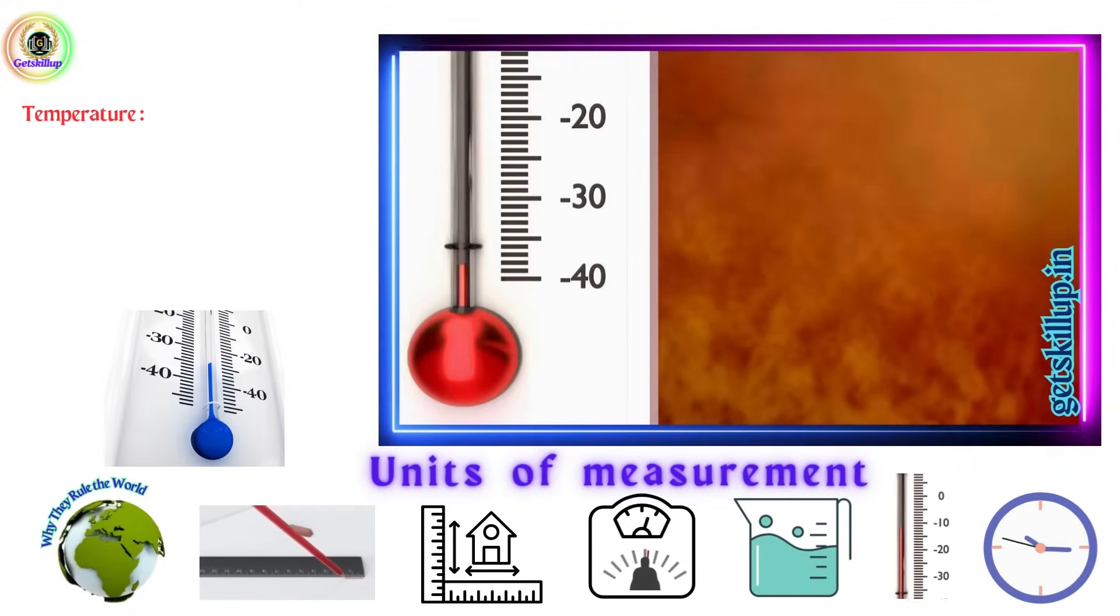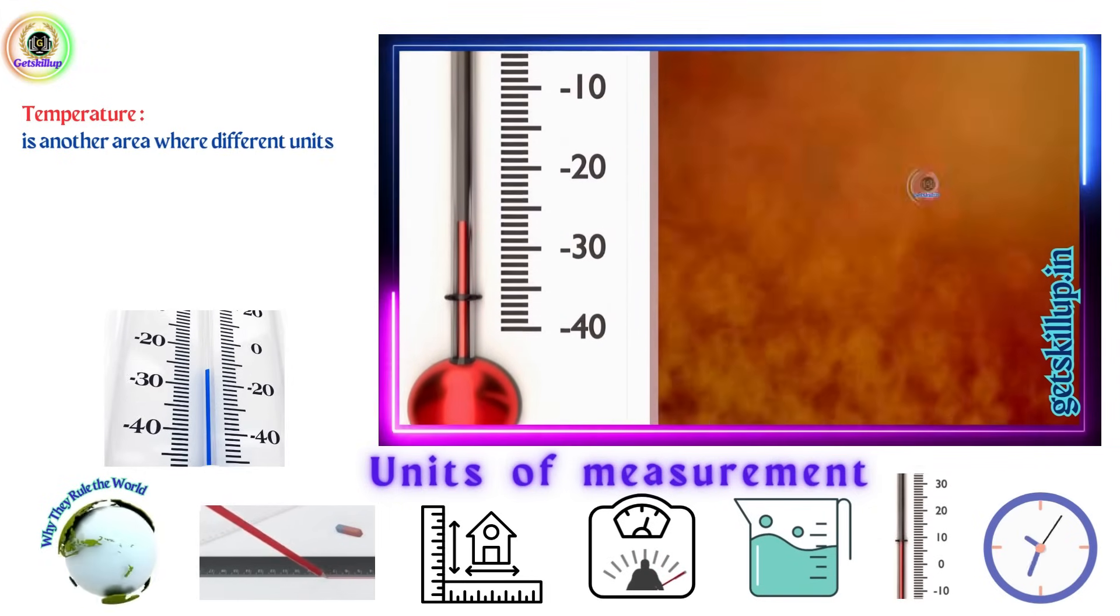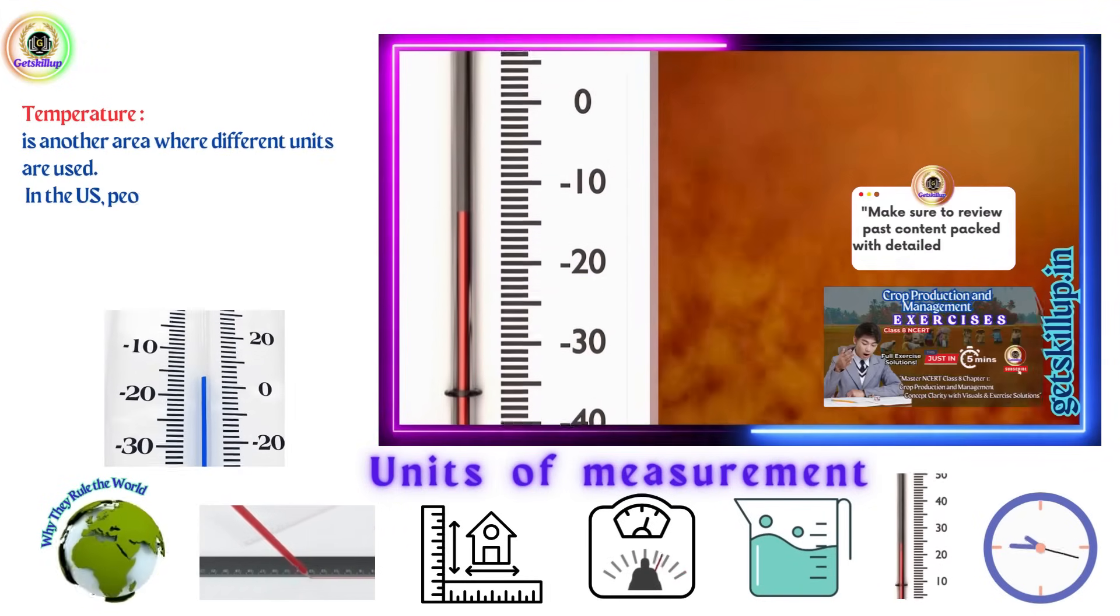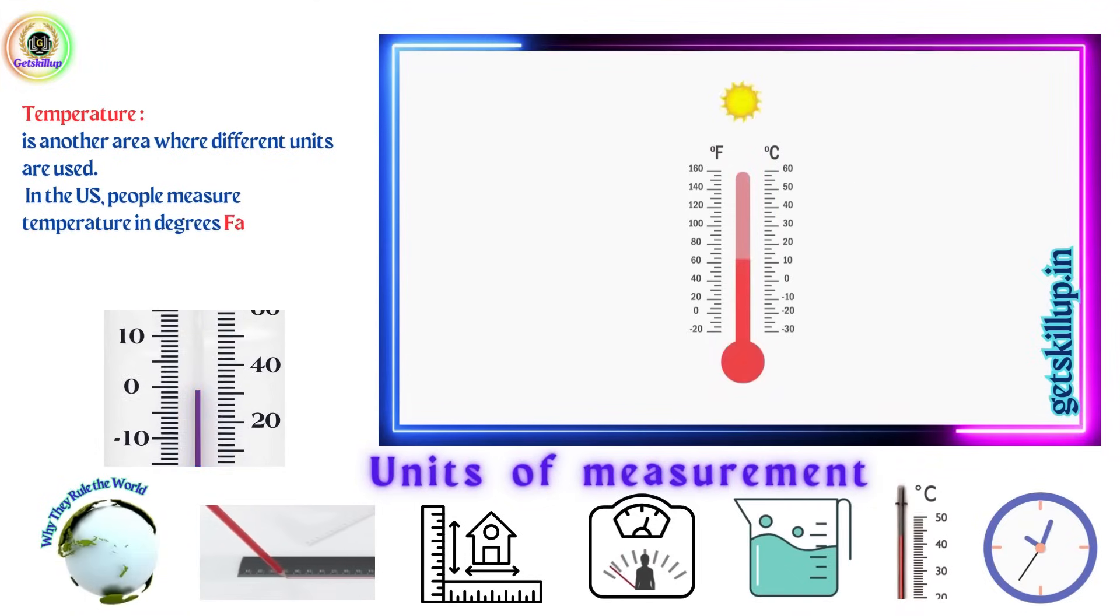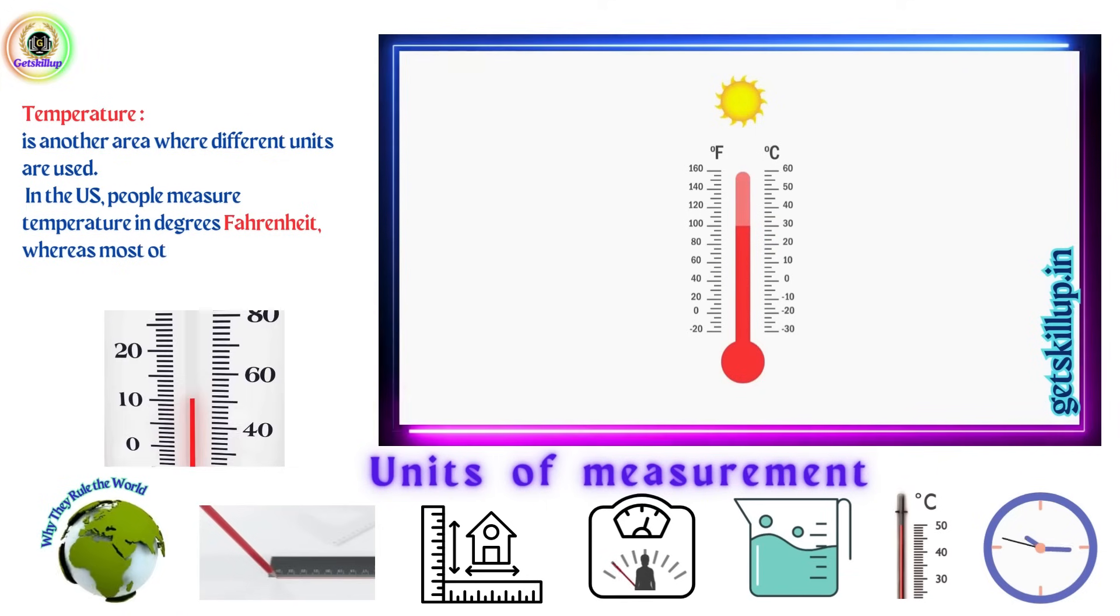Temperature is another area where different units are used. In the US, people measure temperature in degrees Fahrenheit, whereas most other countries use degrees Celsius, following the metric system.